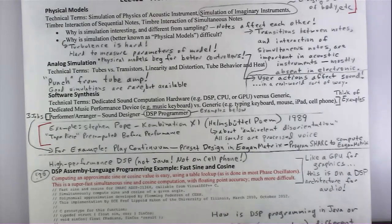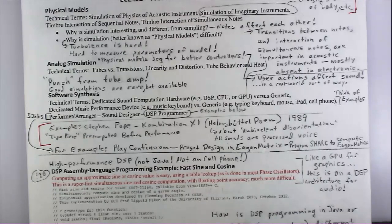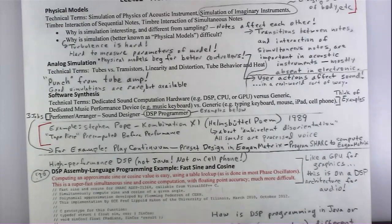I'm going to play you a sound example. This is software synthesis by Stephen Pope, who was a famous figure in music research and editor of the Computer Music Journal, also a composer. This was done at a German conference. It's voice processing, called Combination Elf, done for a conference in Hamburg.